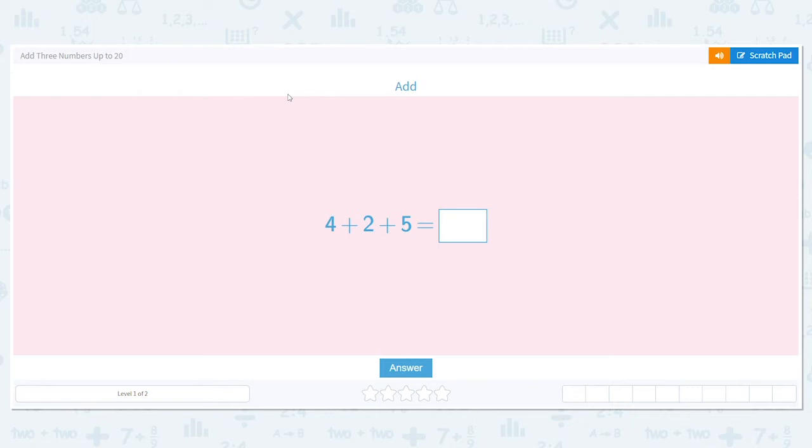So the first thing I'm going to add if possible would be doubles. Five plus five, four plus four, six plus six. I have no doubles. So what I'm going to do next is I'm going to look for near doubles, things that are close to being a double.